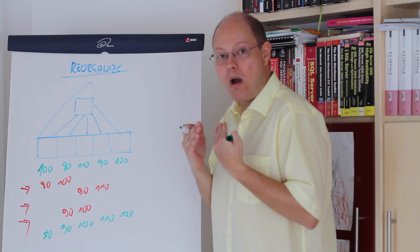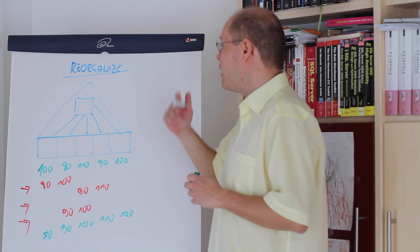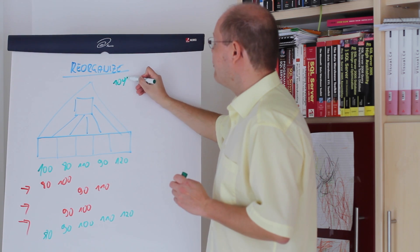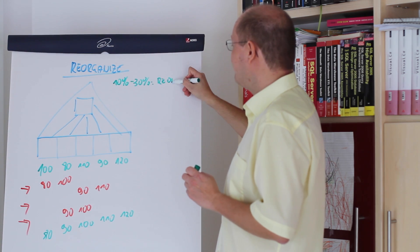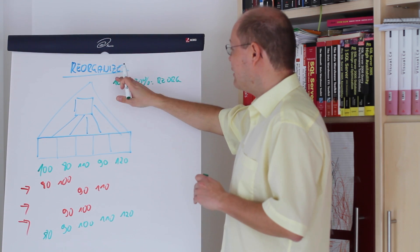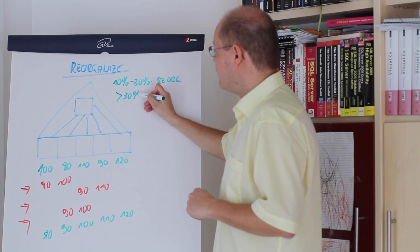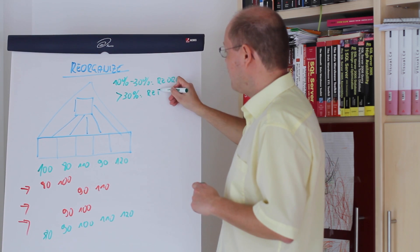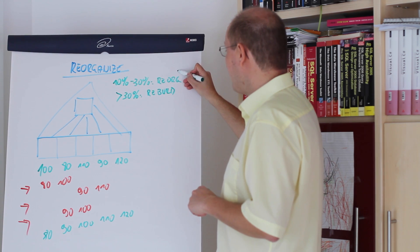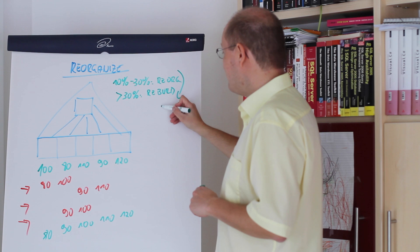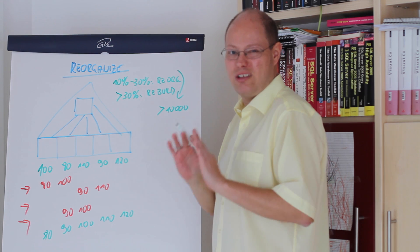The question is now when should you run a rebuild operation and when should you run a reorganize operation. Microsoft recommends running an index reorganize operation when you have index fragmentation between 10 and 30 percent in the leaf level. When index fragmentation is larger than 30 percent, Microsoft recommends an index rebuild operation. Both operations should only be applied when you have at least 10,000 pages in the leaf level — otherwise index fragmentation doesn't matter.